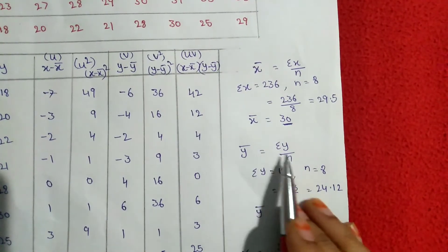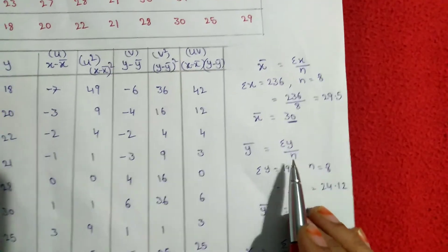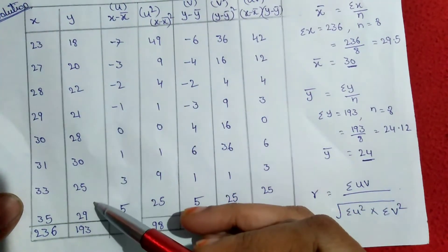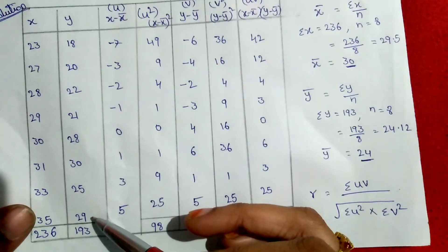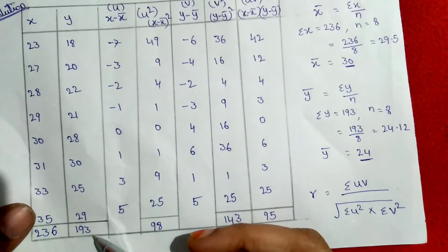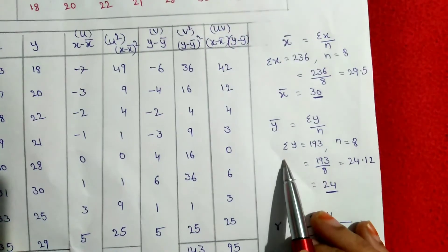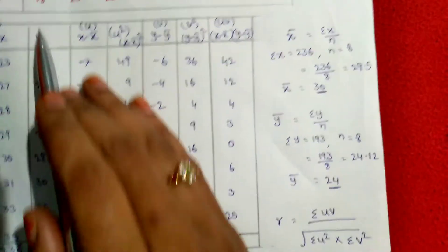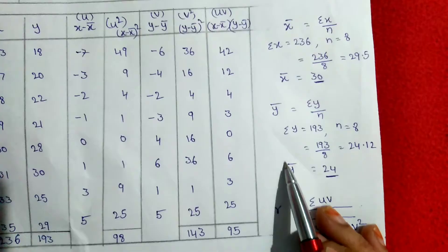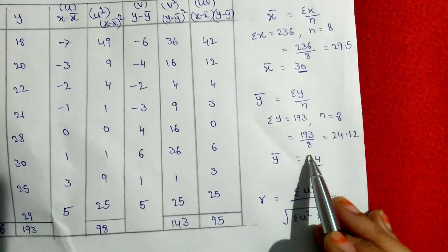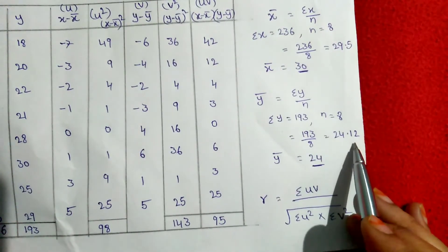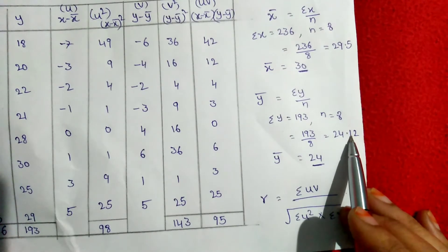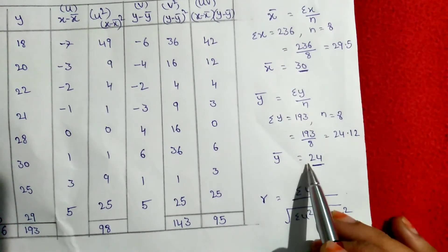After that, y-bar equals summation y by n. The total sum of the y variable values is 193, and the number of observations is 8. So y-bar equals 193 divided by 8, which equals 24.12, rounded to 24.